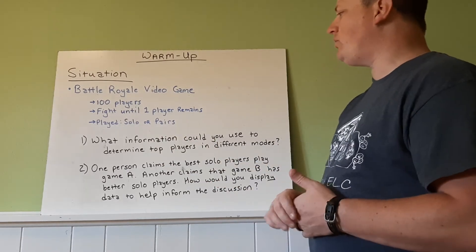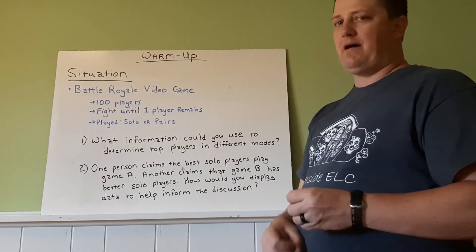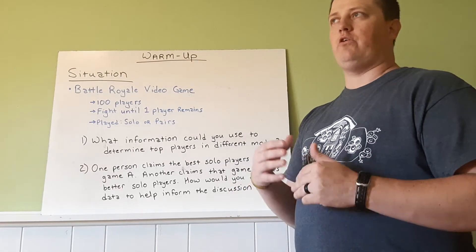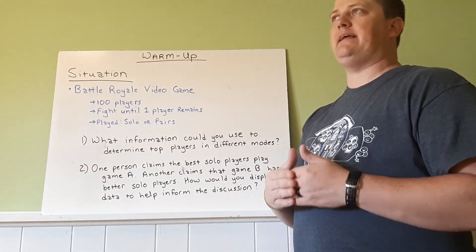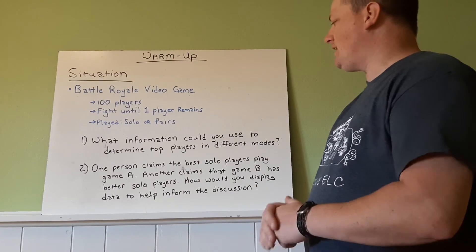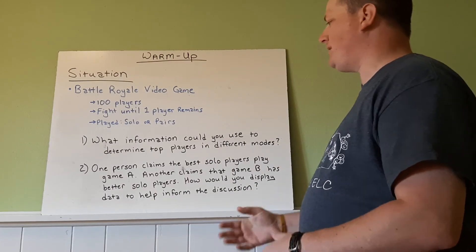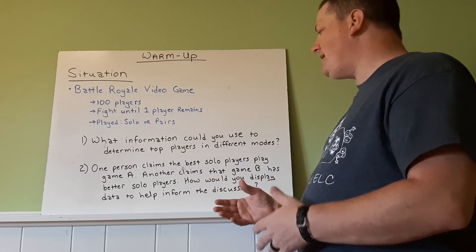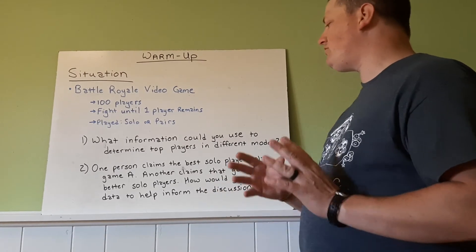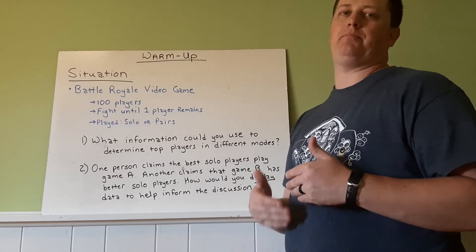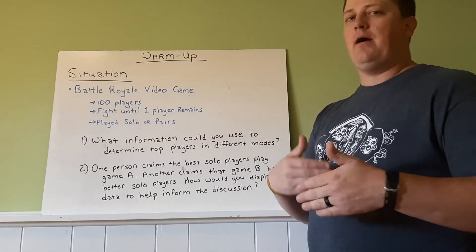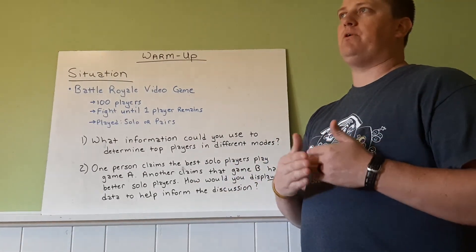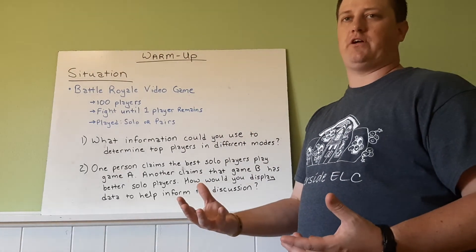And then number two: I want you to think about how you would graphically show this data so you could identify who the better player is. One person claims that the best solo players play in game version A; another claims that game B has the better solo players. How would you display data to help inform the discussion — not picking a side, but showing the data so that people can make a decision based off of what you're giving them?